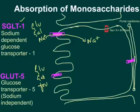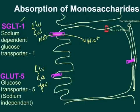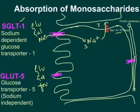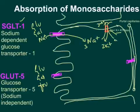If sodium concentration in the enterocyte cytoplasm is less than in the lumen, sodium moves from lumen into the enterocyte cytoplasm, and the sodium gradient must be maintained. The sodium gradient is maintained by a basolateral sodium-potassium ATPase enzyme, which pumps three sodium ions out of the cytoplasm into the extracellular matrix and brings two potassium ions in, using ATP.